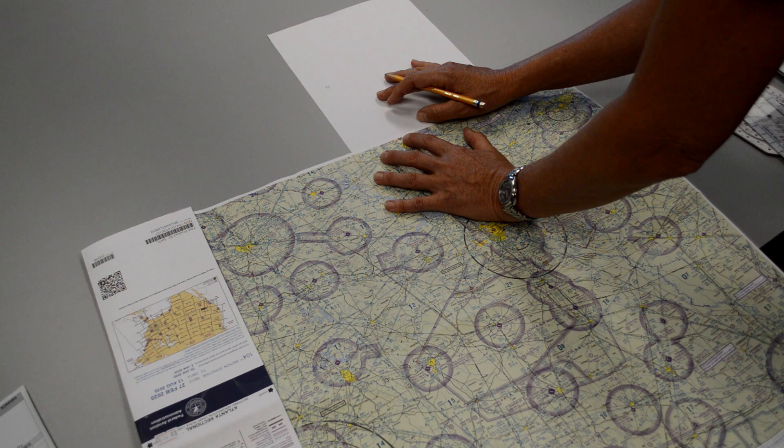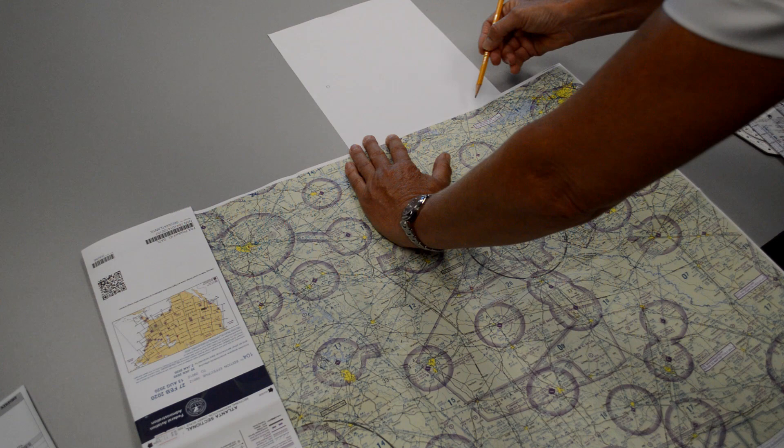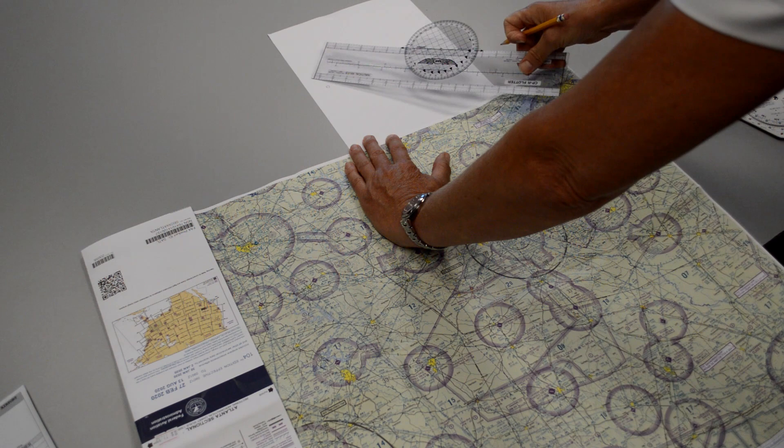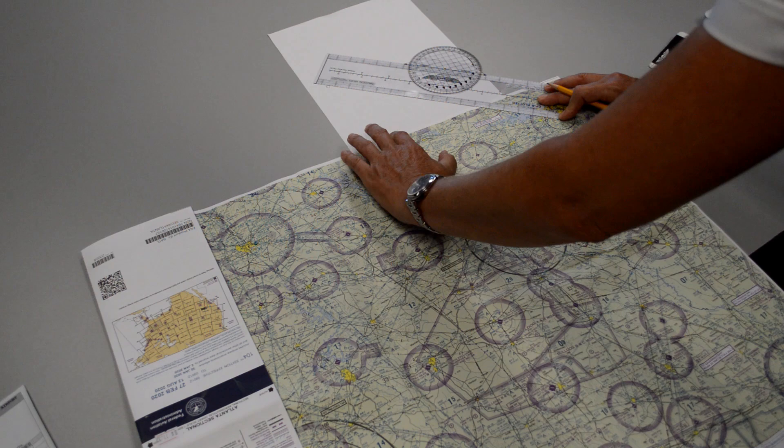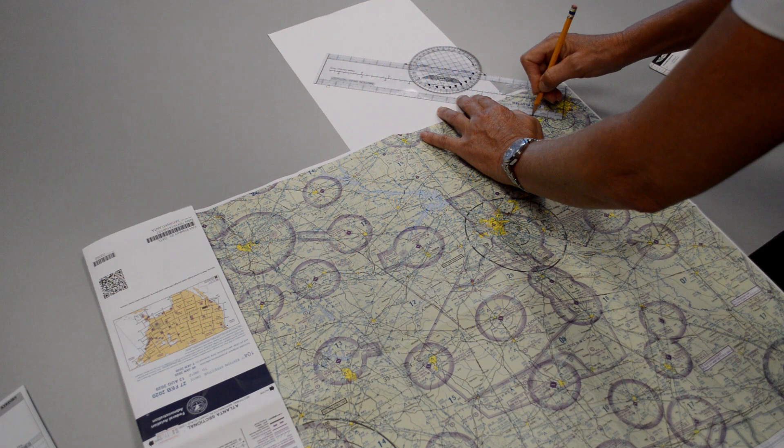Now I can make a straight line from Greenville Airport down here to the Columbia Airport. So I just need some sort of straight edge, and then I'll line this up, and then I want to draw a pretty heavy dark line with a pencil so I can see it easily while I'm flying along.